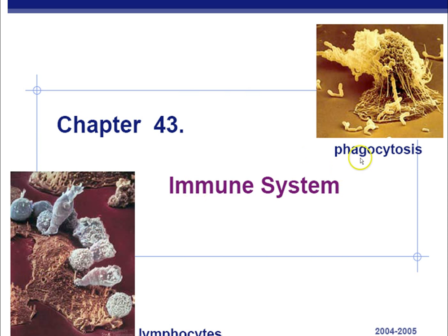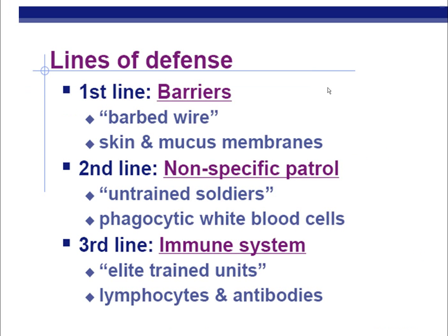Remember, phago means to eat. Phagocytosis is basically cells eating something else. Here we have a white blood cell eating some bacteria. This is the first thing we need to get notes on: we have three lines of defense in our immune system.